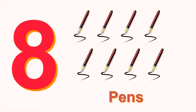Here we can see something which we use to write. What are these? These are pens. Let's count how many pens are there. 1, 2, 3, 4, 5, 6, 7, 8. How many pens are there? 8 pens.